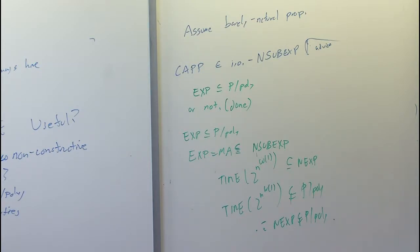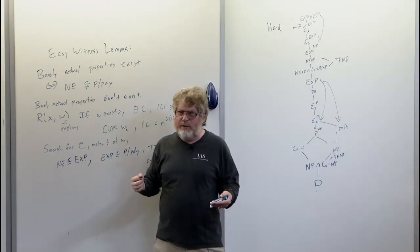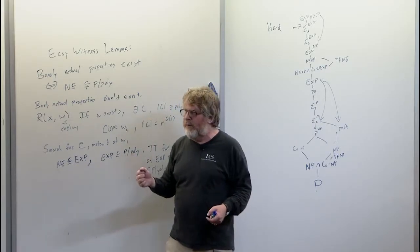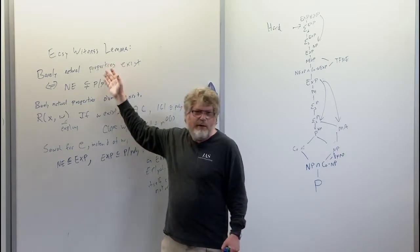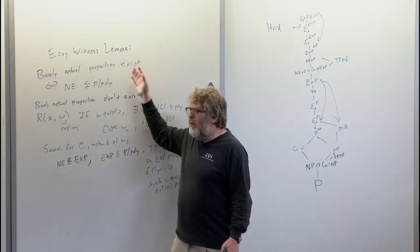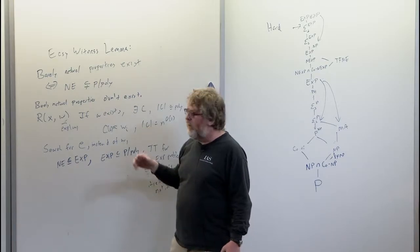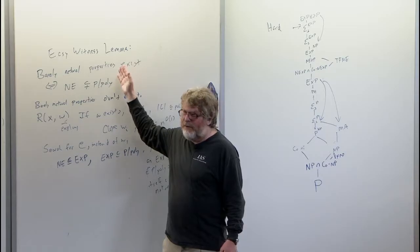So that says that in some sense — Razborov-Rudich said heuristically natural properties are what we use to prove circuit lower bounds — and this is saying that some variety of natural property is necessary and sufficient to prove circuit lower bounds. Note that the statement of this does not involve randomized algorithms at all, but proving it ended up using all the constructions of pseudorandom generators from hard functions implicitly, in the step where we put CAPP in.